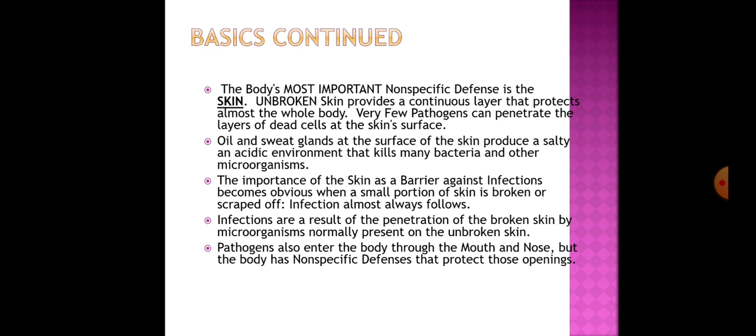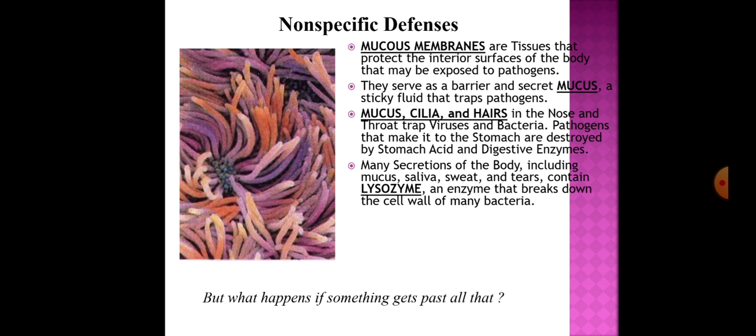Pathogens also enter the body through the mouth and nose, but the body has non-specific defenses that protect these openings. Mucus membranes are tissues that protect the interior surfaces of the body that may be exposed to pathogens. They serve as a barrier and secrete mucus, a sticky fluid that traps pathogens. Mucus, cilia, and hairs in the nose and throat trap viruses and bacteria. Pathogens that reach the stomach are destroyed by stomach acid and digestive enzymes.